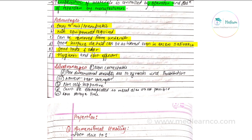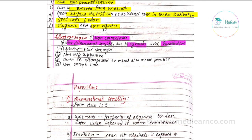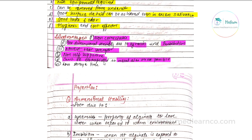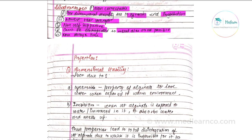Disadvantages: alginate is non-correctable because it is an irreversible impression material. It has poor dimensional stability due to two important properties — syneresis and imbibition. It has the lowest tear strength. It is non-self-supportive, which is why a perforated tray with a rimlock system is used. It cannot be electroplated, so metal dies are not possible. Storage time is low.